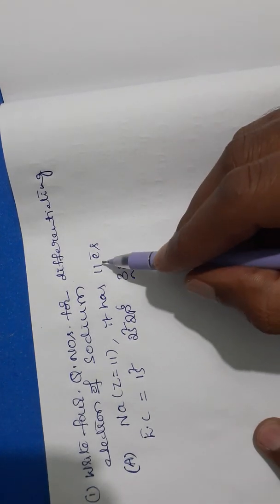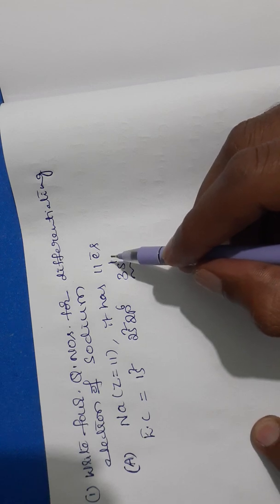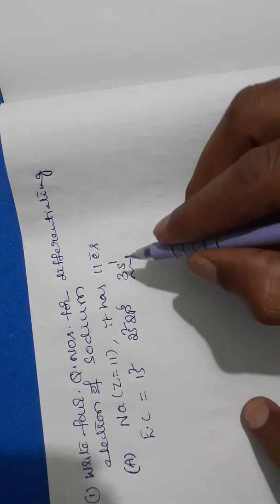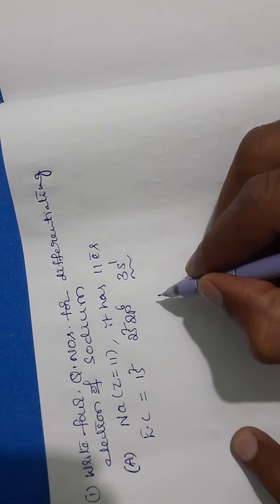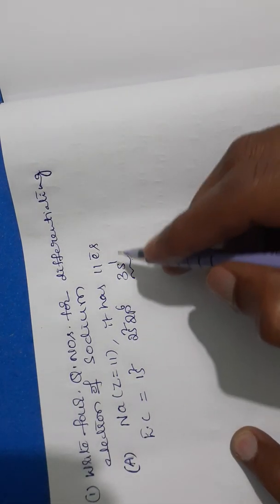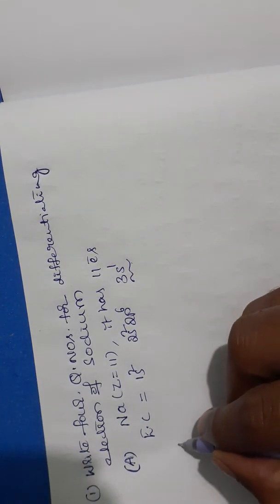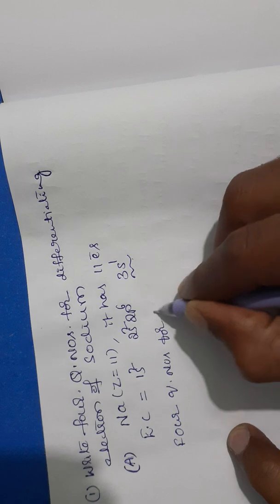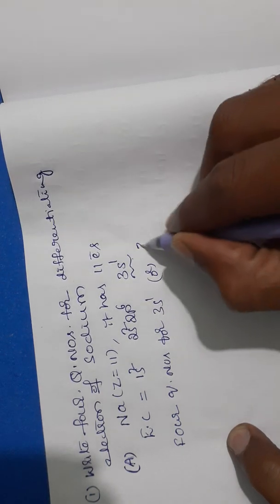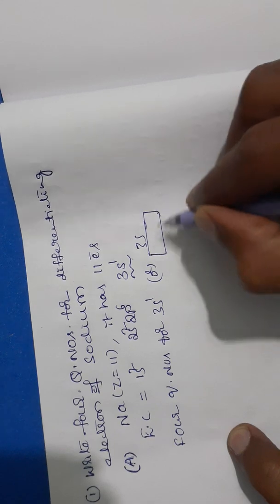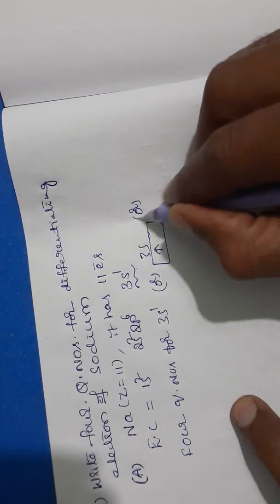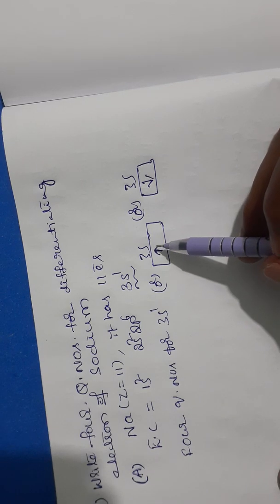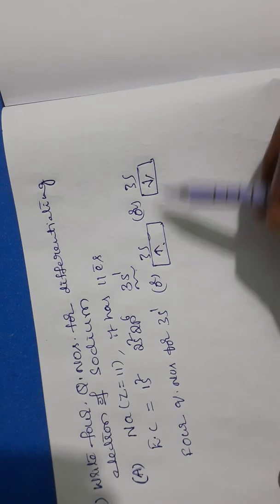The differentiating electron is the 11th electron, which goes into 3s. Now we want to write four quantum numbers for the differentiating electron present in 3s. In any orbital, if there is only one electron, it may spin in the clockwise direction or anti-clockwise direction.